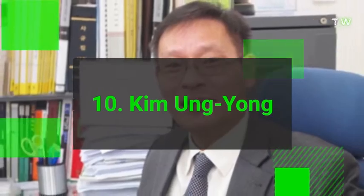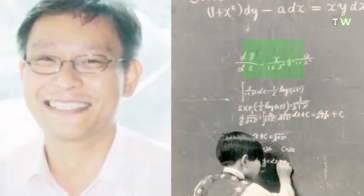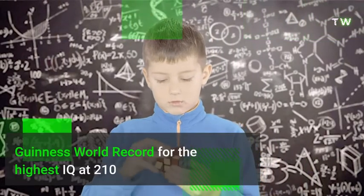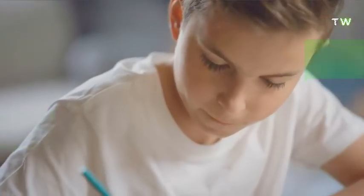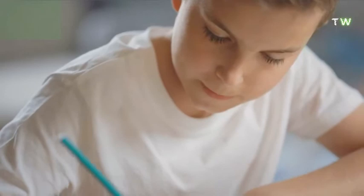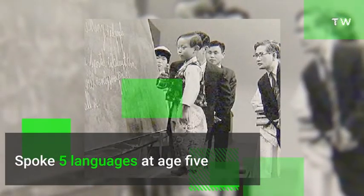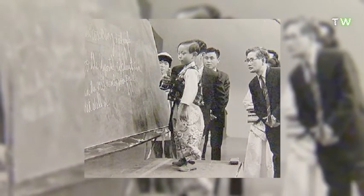Number 10. Kim Ung-yong is a South Korean professor and former child prodigy. He held the Guinness World Record for the highest IQ at 210. It is said he taught himself to read Korean and Chinese characters at age 1, solved math problems at age 3, and spoke 5 languages at age 5. He also appeared on TV in Japan solving problems to a shocked audience at age 5.